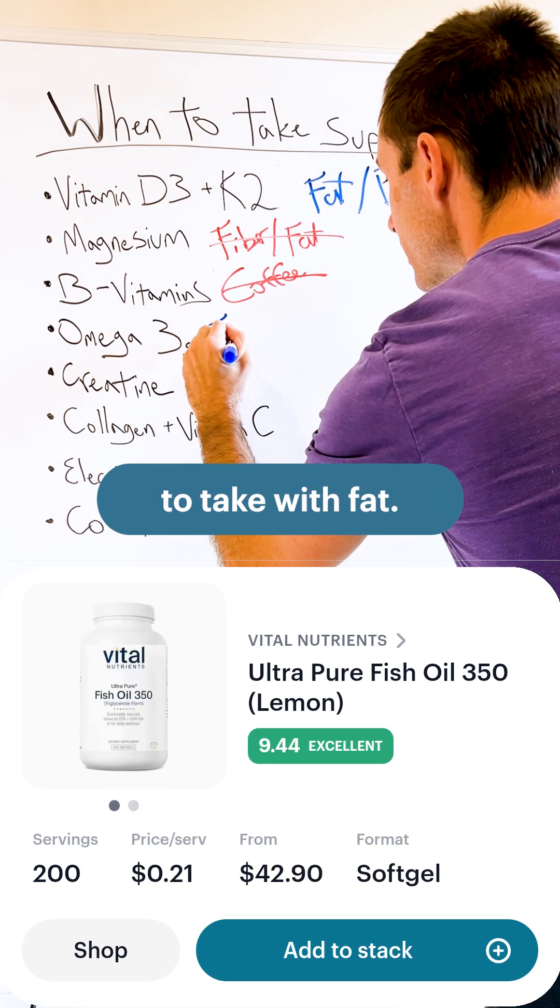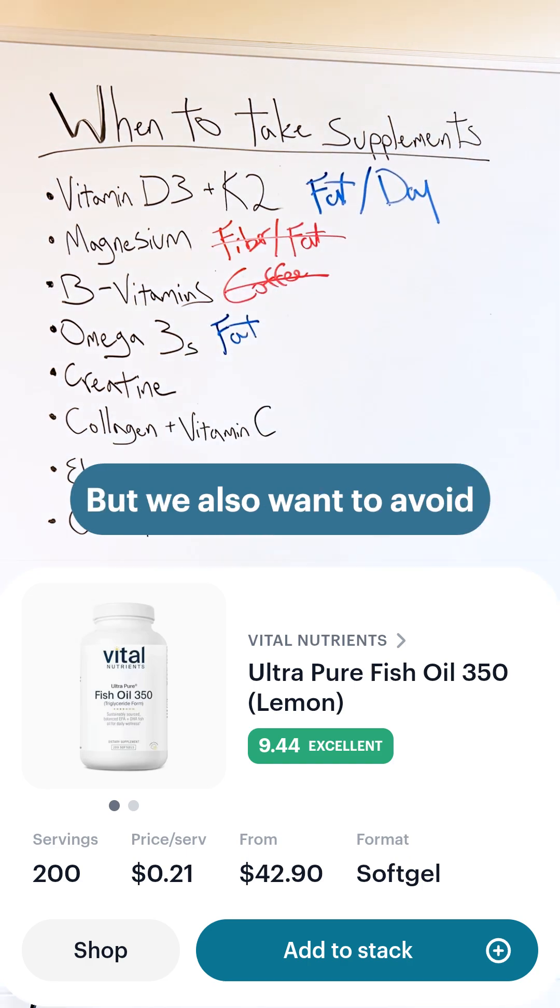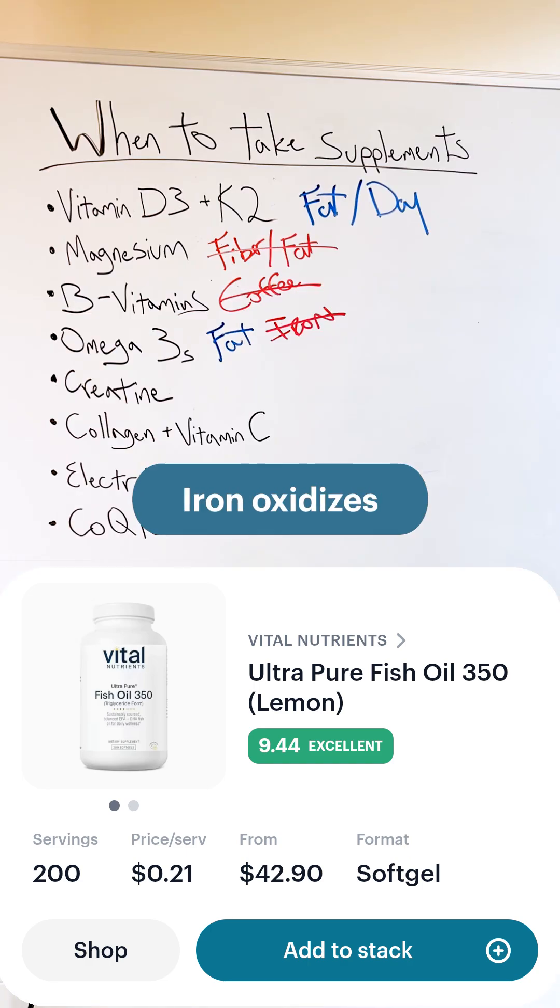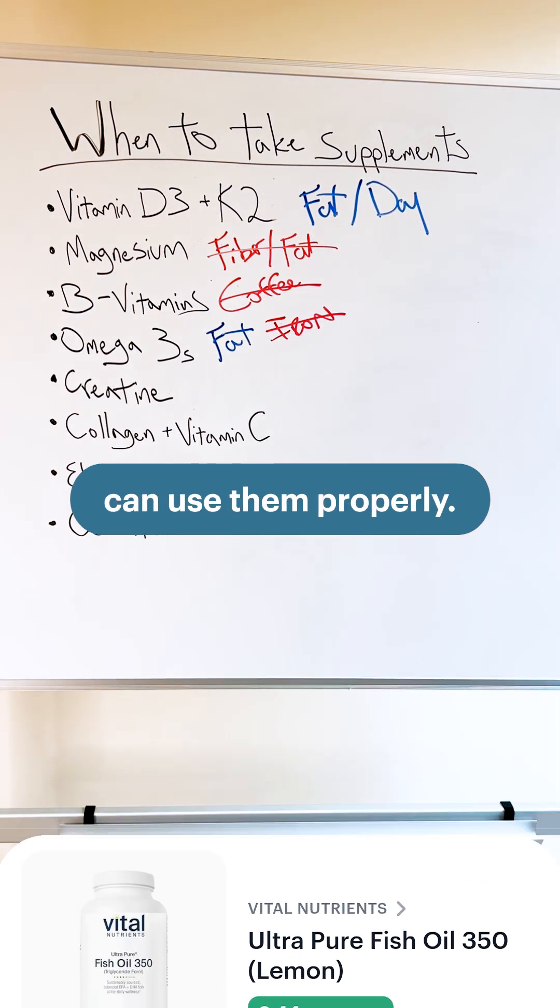Now omegas we want to take with fat, but we also want to avoid high iron foods like red meat. Iron oxidizes omega-3s, which basically damages them before our body can use them properly.